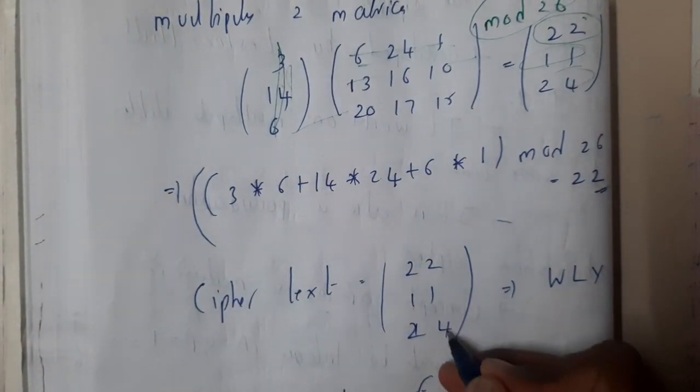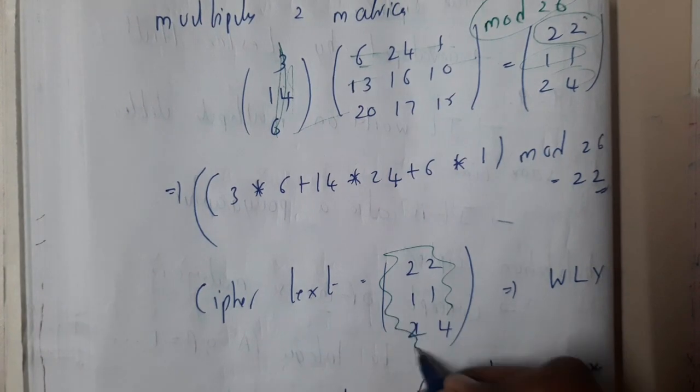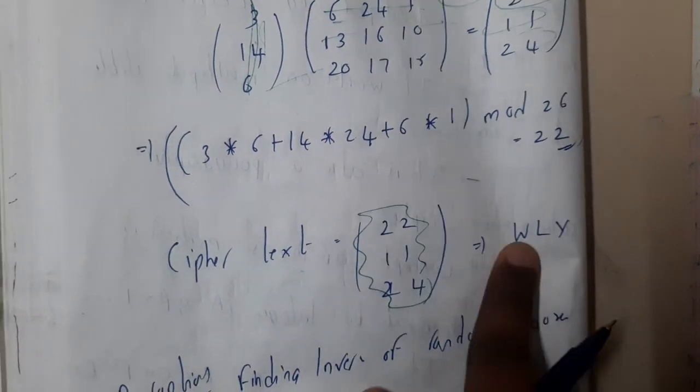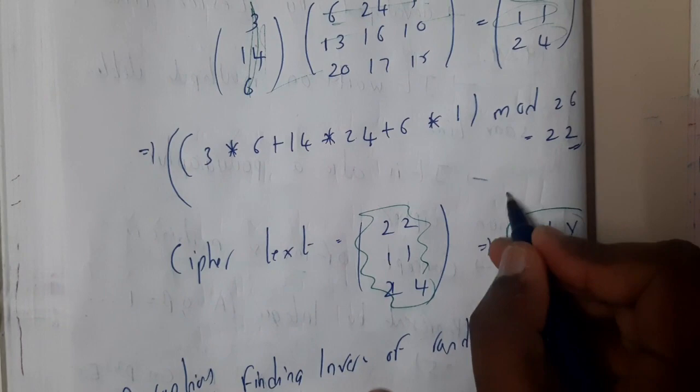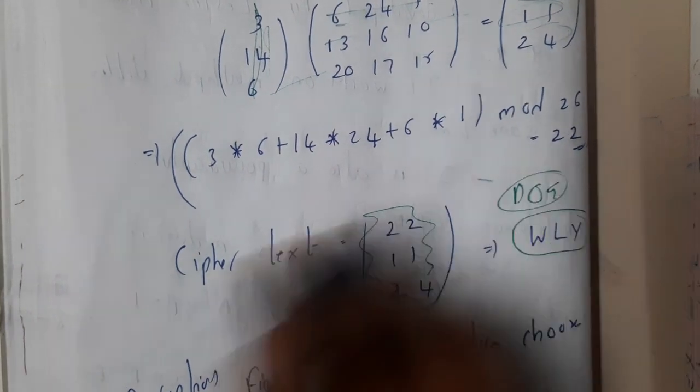At the end you got the cipher text as 22, 11, 24. Now represent these things in terms of character, that is WLY. From this, can you say that it is DOG? No, no one can say it.